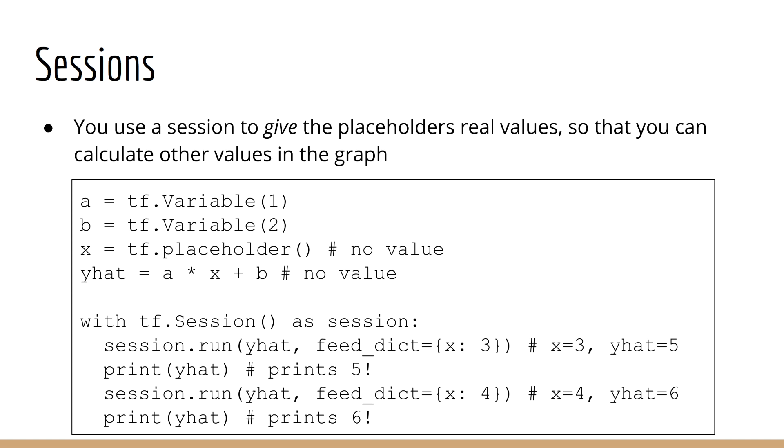It's only later using a session that these variables get values and we can see their output. So for example, let's say we want to set x to some value and get the corresponding y hat. In this case, we would call session.run, pass in y hat, and then using the feed dict argument, we would pass in the input data for the placeholder x. So if a equals 1 and b equals 2 and x equals 3, then y hat would be 1 times 3 plus 2, which is 5. We could then later pass in another x, say 4, and that would give us 1 times 4 plus 2 equals 6. So x is only a placeholder, but we can give it values using session.run and then get out the corresponding y hats.